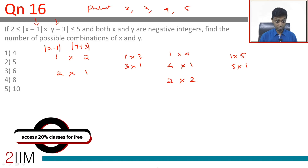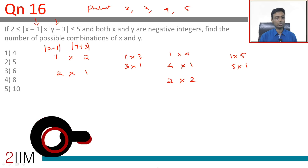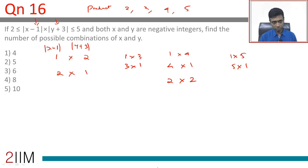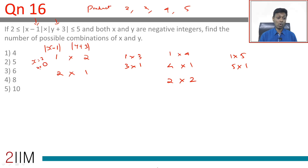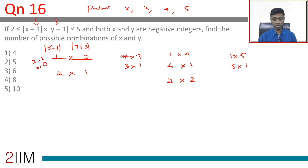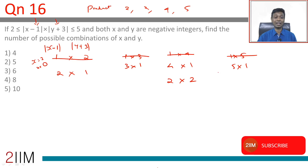If |x-1| = 1, then x-1 = 1 or -1, so x = 2 or x = 0. Neither is a negative integer, so |x-1| cannot be 1. This eliminates cases where one factor's modulus is 1 from x's side — specifically it eliminates 1×2, 1×3, 1×4, and 1×5.